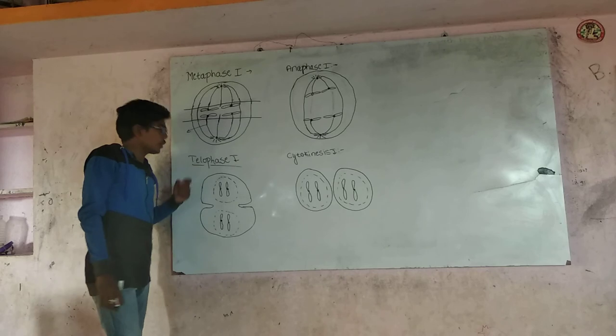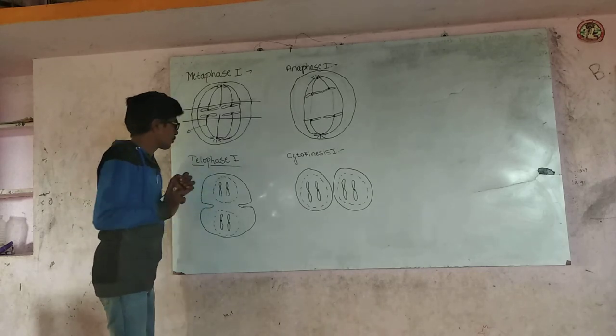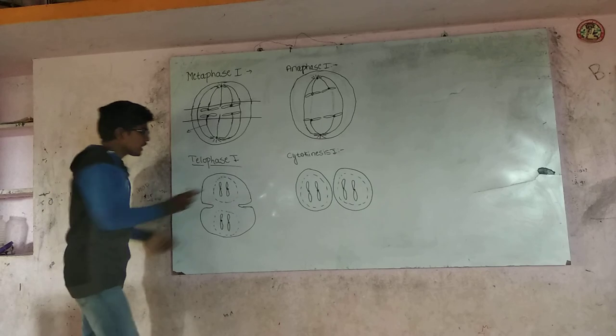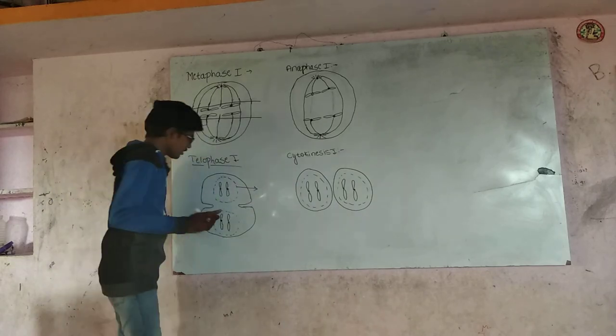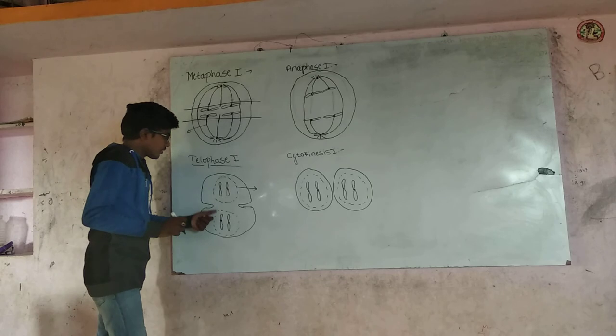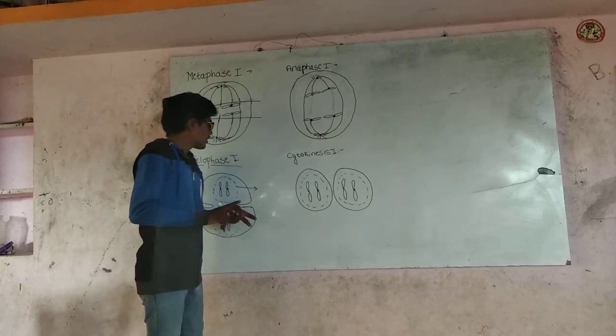In case of Telophase I, it is reversed as prophase. Nuclear membrane is present. Then spindle fiber and aster rays are disappeared.